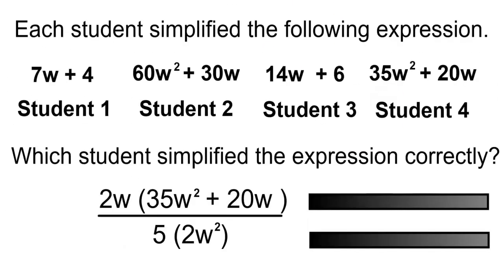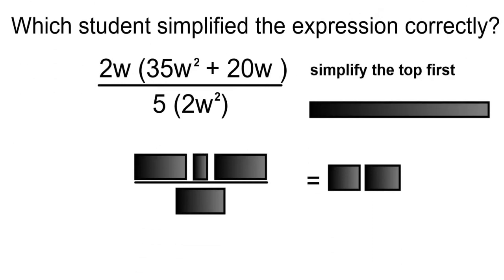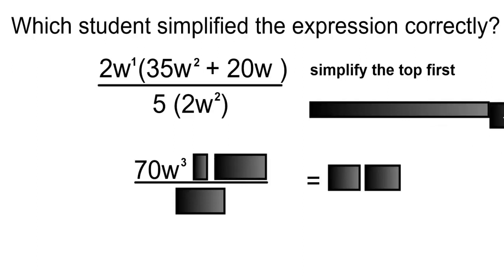Example number 2. Each student simplified the following expression. These were their answers. Only one of the students was correct. Which student simplified the expression correctly? Simplify the top first. 2 times 35 is 70. And W, which is W to the 1 times W to the 2, will be W to the 3 as you add the exponents together.